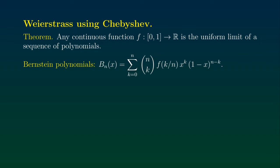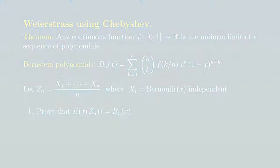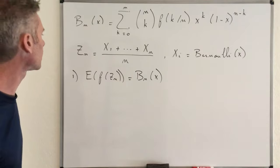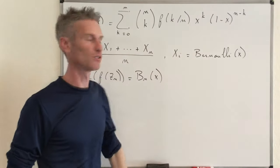Notice that Bn has degree n, and the goal is to prove that Bn converges uniformly to the function f. To do this, I'm going to define a random variable Zn equal to (X1 + X2 + ... + Xn) divided by n, where the random variables Xi are assumed to be independent Bernoulli random variables with parameter x. To make things easier, I broke the proof into three steps. The first step is to prove that the expected value of f(Zn) is equal to Bn(x).